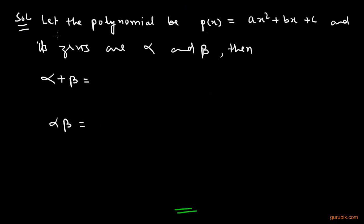First of all, we shall write the polynomial p(x) equals to ax square plus bx plus c, and its zeros are alpha and beta. Then the sum of zeros is given to us root 2 and product of zeros is given to us 1 over 3. And we know that the sum of zeros of a polynomial ax square plus bx plus c is equal to minus b over a and the product is c over a.